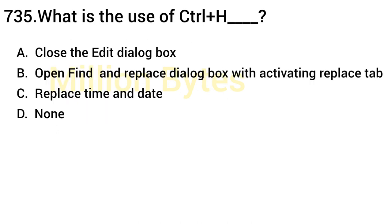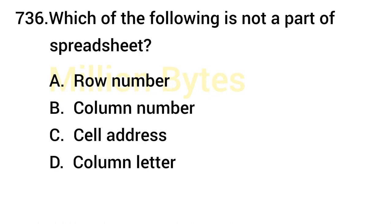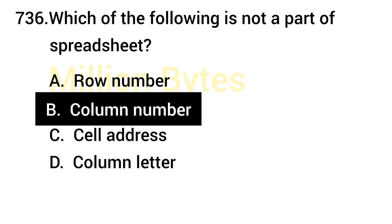What is the use of CTRL + H? It opens the Find and Replace dialog box, activating the Replace tab. Which of the following is not a part of a spreadsheet? Answer is Column Number — in MS Excel you do not find a column number.